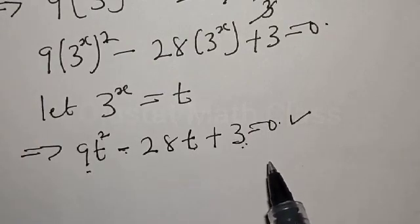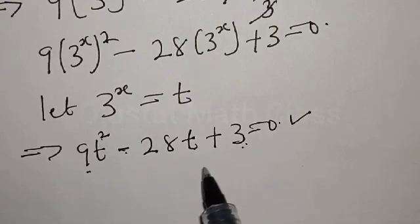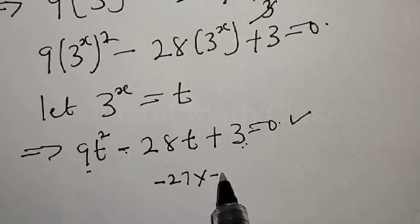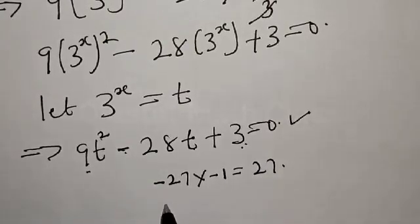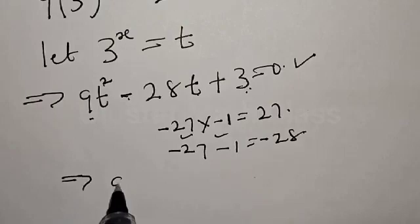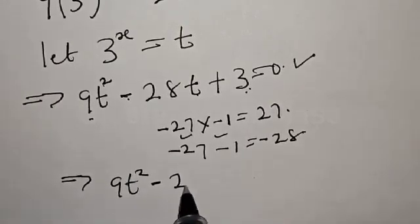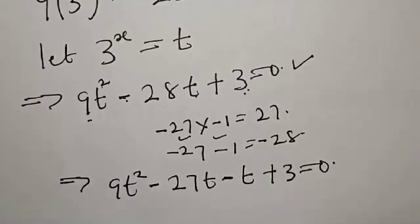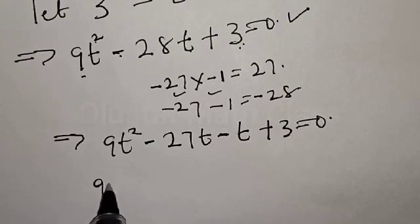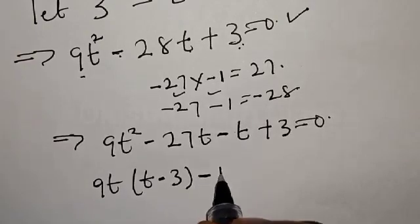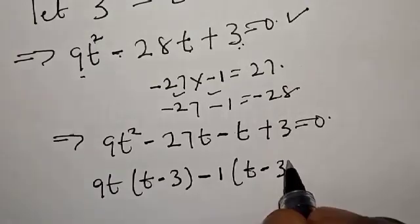We need to find two numbers such that the product is equal to 27 and the sum is equal to minus 28. If we have minus 27 times minus 1, that gives 27. And minus 27 plus minus 1 gives minus 28. So this satisfies our requirement. This implies that we have 9t squared minus 27t minus t plus 3 equal to 0.